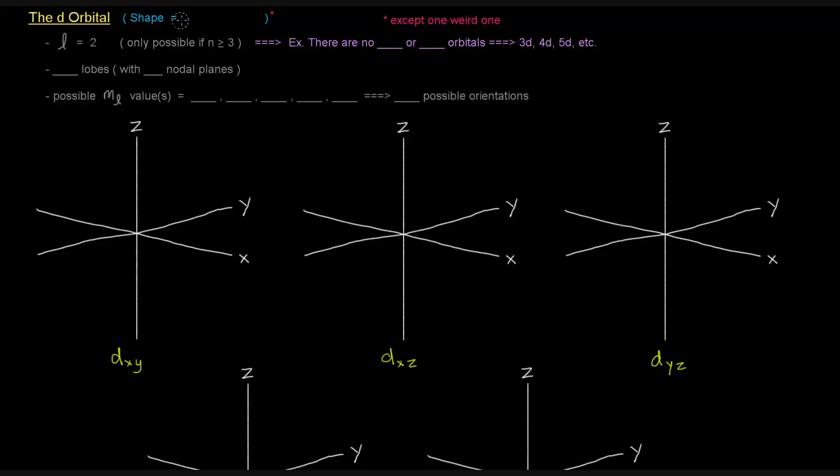The shape of the d orbitals, they're clover-shaped. They have like four-leaf clovers. And you'll see a little asterisk next to that, and that's because there's one weird one that's not quite a clover shape. So the d orbital's L value is 2.